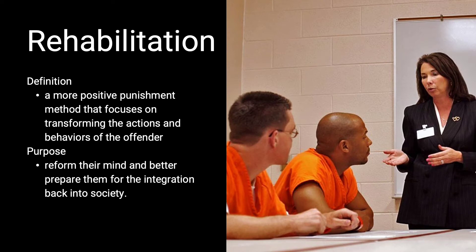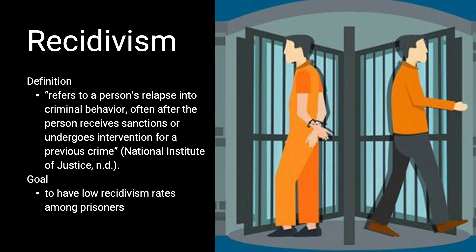Next is rehabilitation, a more positive punishment method that focuses on transforming the actions and behaviors of the offender. The main goal for the justice system is to incorporate these programs by lowering recidivism rates and improving offenders' mental health, behaviors, and social interactions. By helping offenders reform their minds, they are better prepared to re-enter back into their community upon release. The final term is recidivism, which refers to a person's relapse into criminal behavior often after they have been released from a sanction. An inmate has two choices upon their release: re-offend or desist from committing further crime. The criminal justice system has a goal of having lower recidivism rates and fewer inmates re-offending.